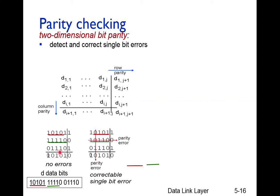For each row, we compute even parity. In the first row, the number of ones is odd, so the parity bit is set to one so the total number of ones becomes even. In the second row, the number of ones is already even, so the parity bit is zero. In the third row, the number of ones is odd, so the parity bit is set to one.